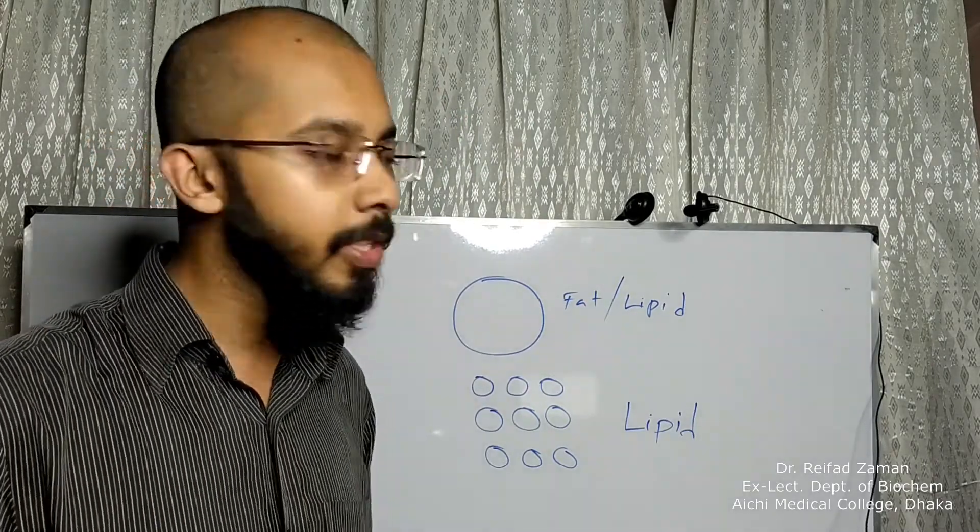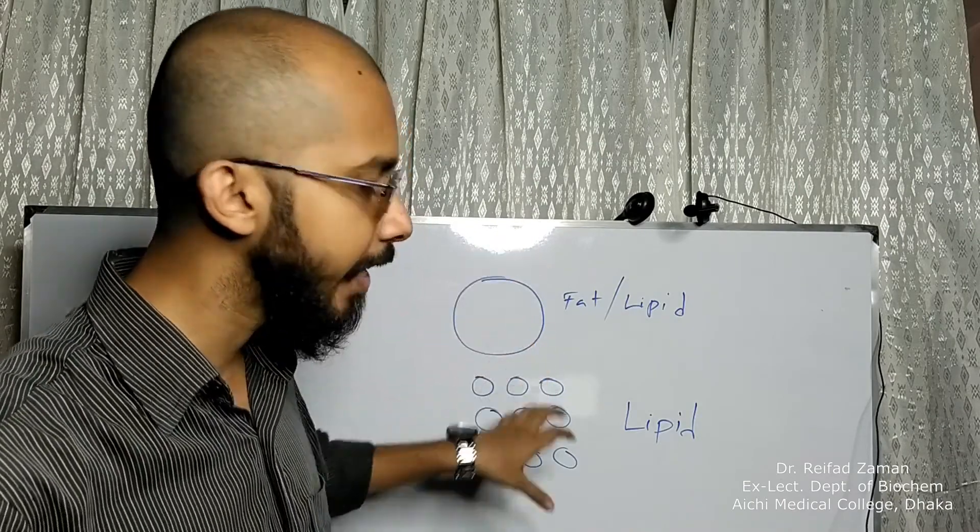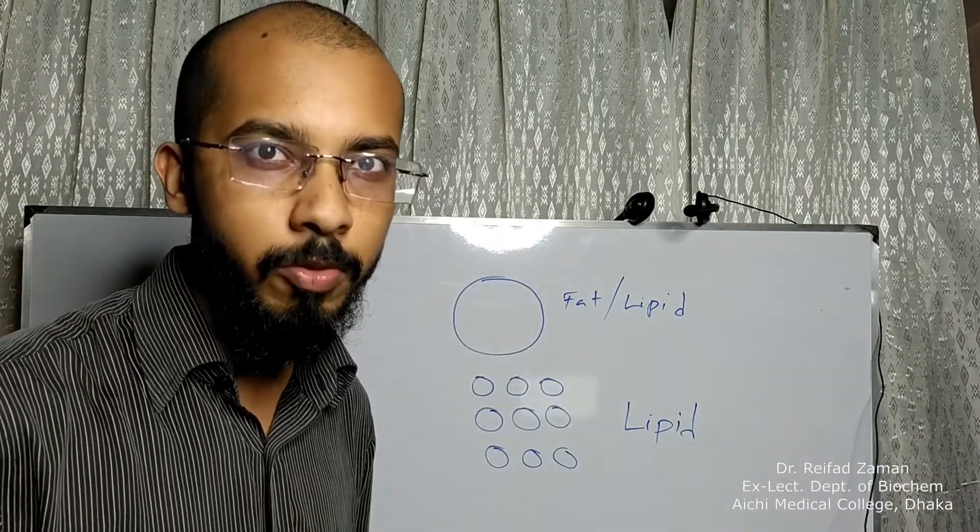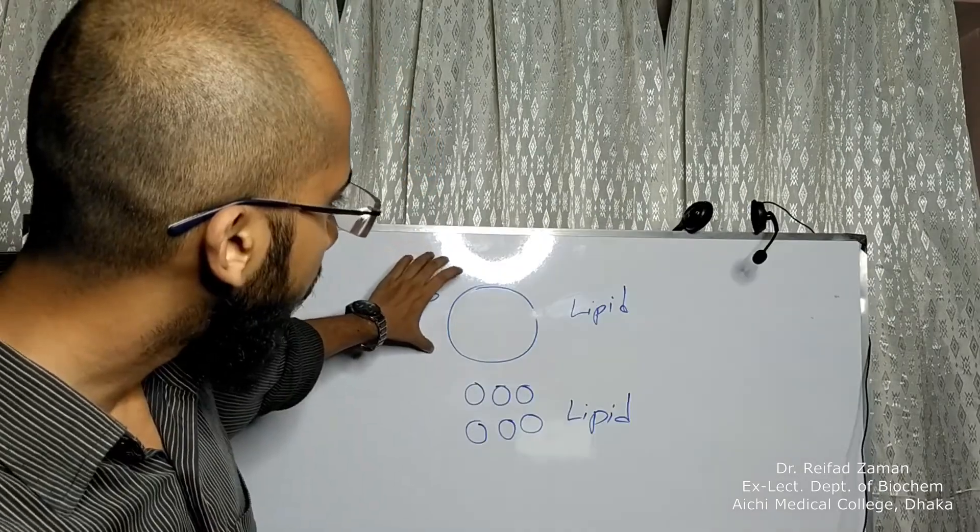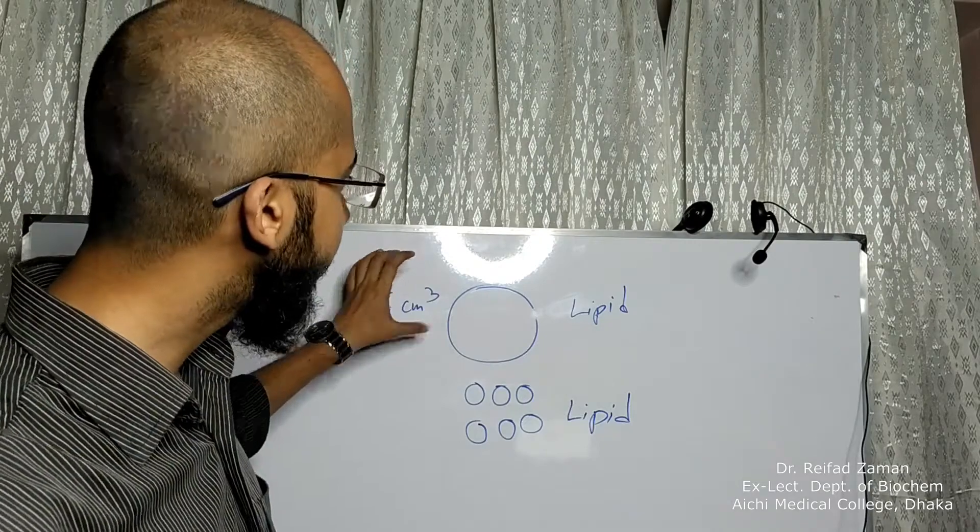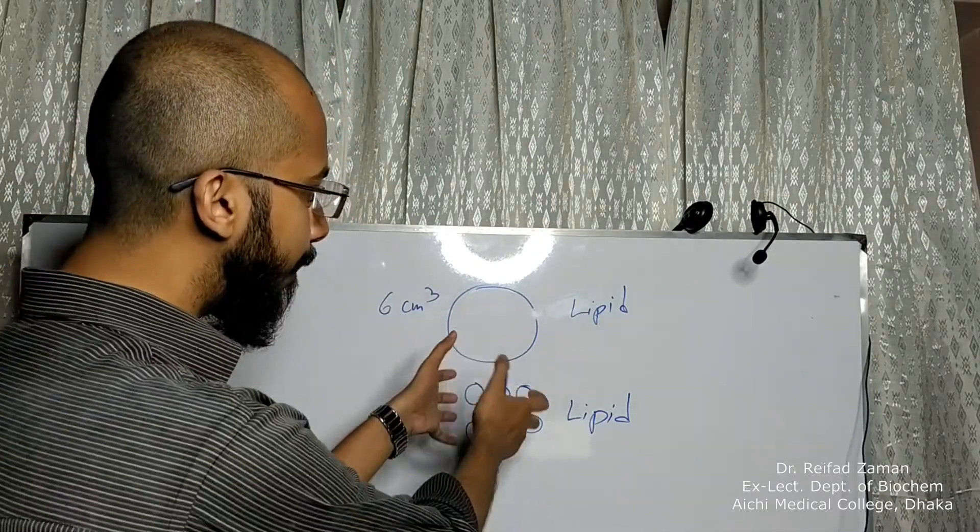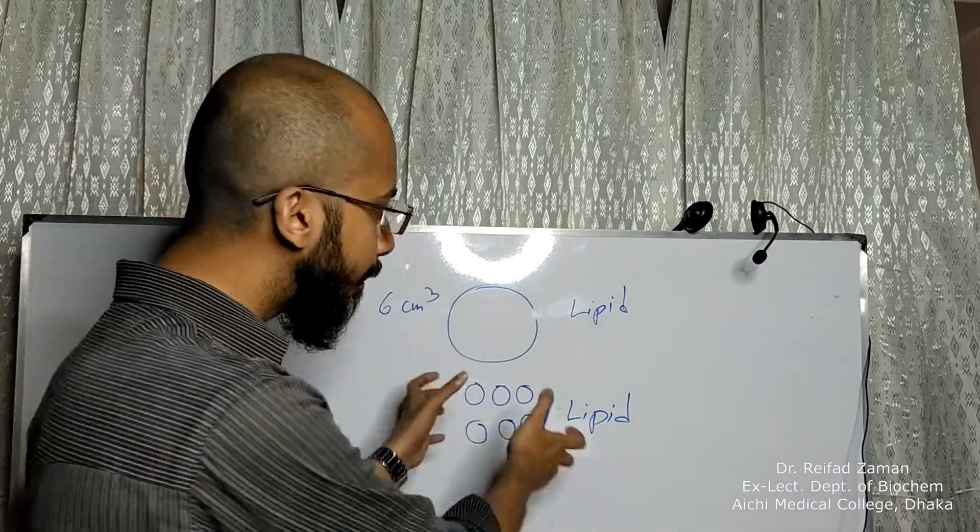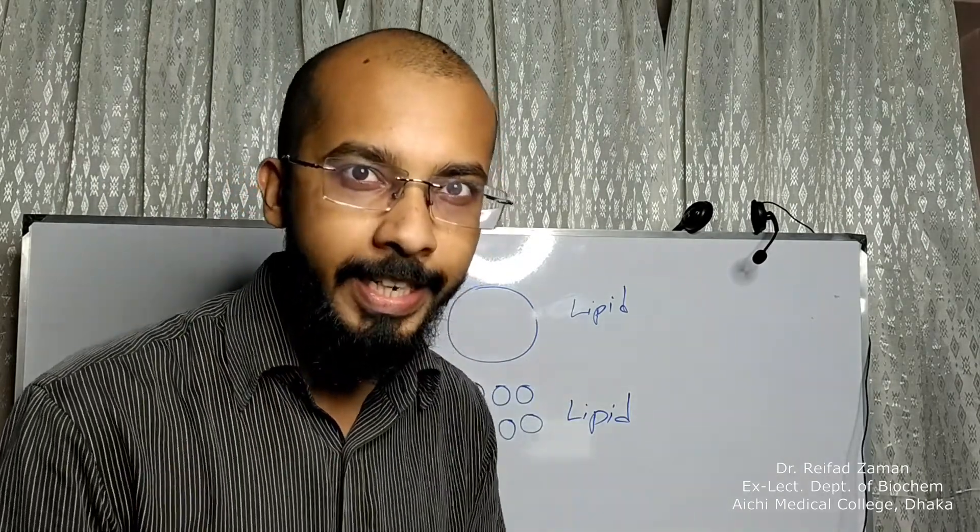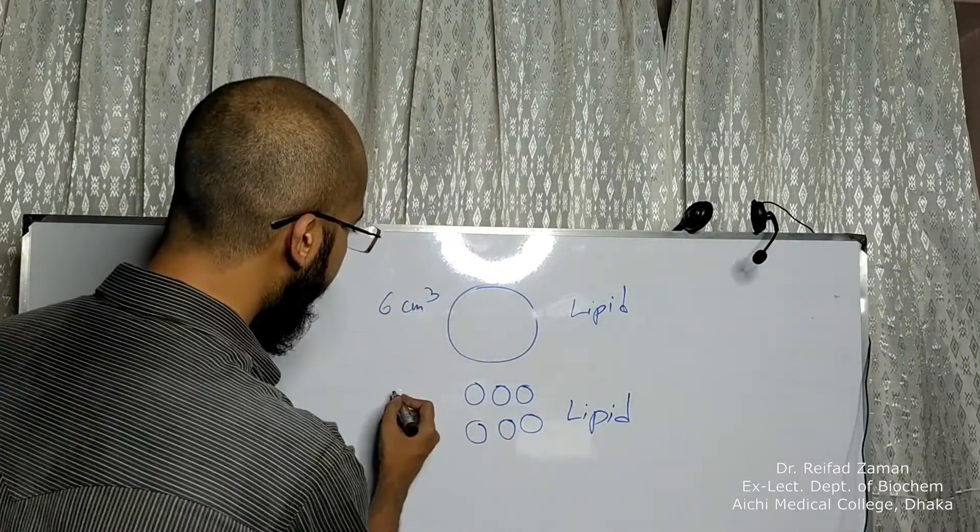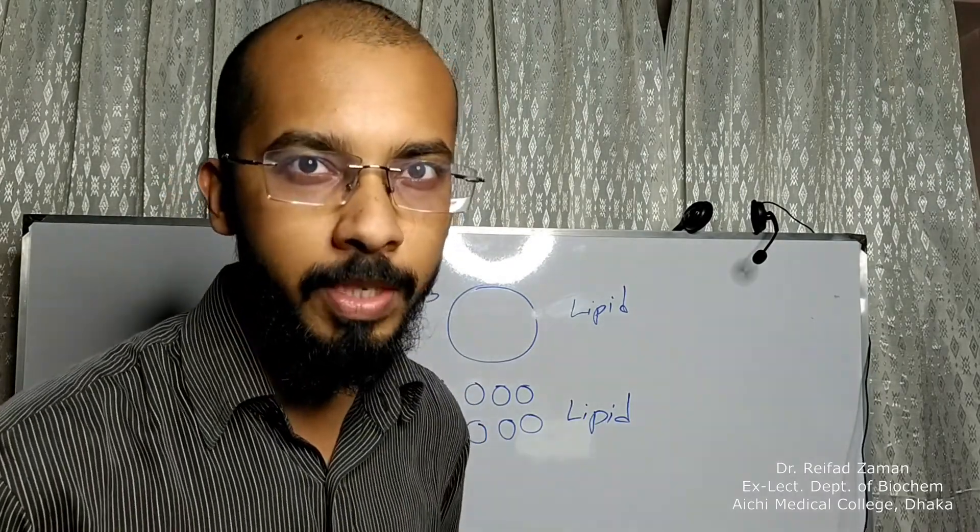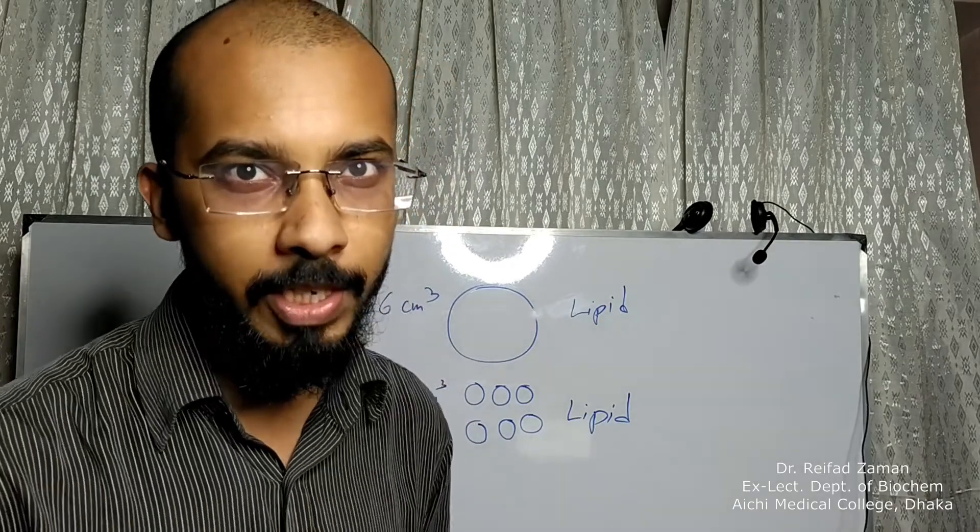If you change the volume into small fat droplets, and then again calculate total volume, this lipid molecule has total volume of 6cm³. And now it has small fat droplets, but if you add them together, the total volume will still equal 6cm³. So total volume doesn't change in case of emulsification.